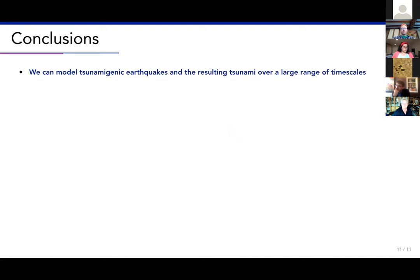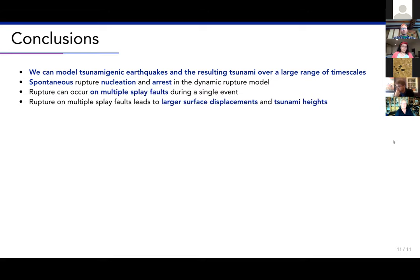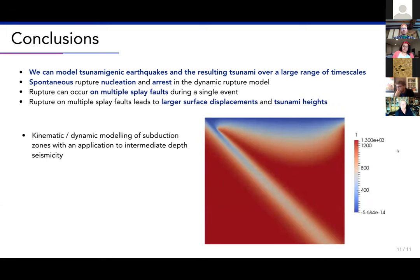We now have a framework for modeling tsunamigenic earthquakes in the subduction zone over a large range of time scales — from geodynamics to seismic cycles to dynamic ruptures. There is spontaneous rupture nucleation and arrest in the dynamic rupture model, all stemming from the geodynamic model, and the rupture can occur on multiple splay faults during a single event, leading to larger surface displacements and tsunami heights. Currently at Leeds, I'm doing kinematic and dynamic modeling of subduction zones with an application to intermediate-depth seismicity, and we are benchmarking a simple thermal subduction model.